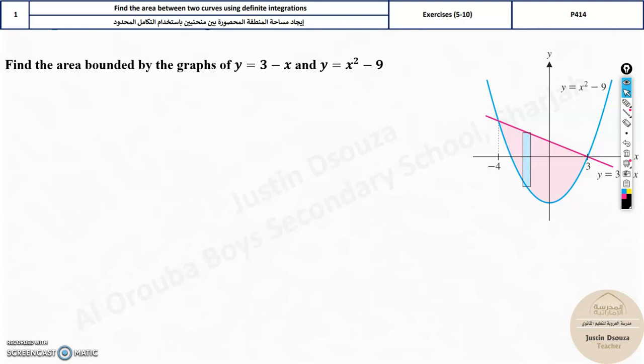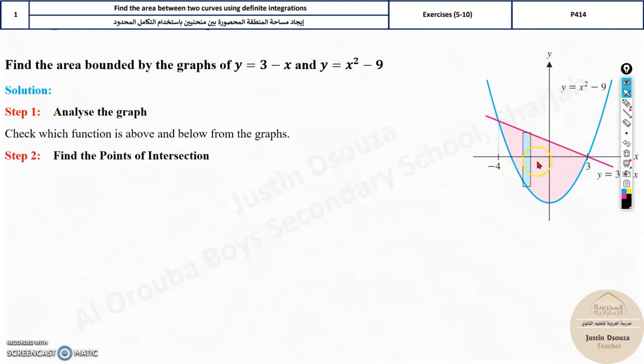I hope you're clear with the graphing, because if you do not graph, it is not possible for you to understand which is the upper function and which is the lower function. If you do not find that, you are not able to solve the problem. You need to analyze the graph, check the upper function and the lower function.